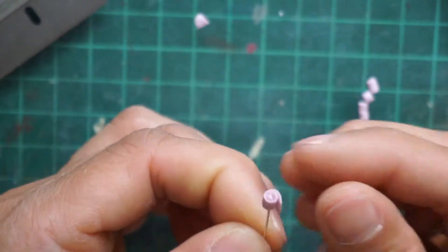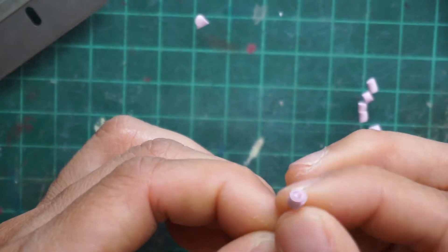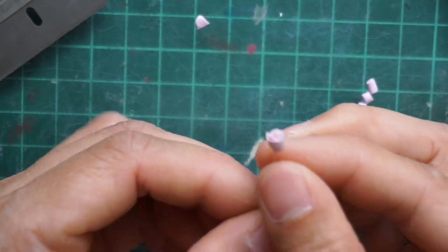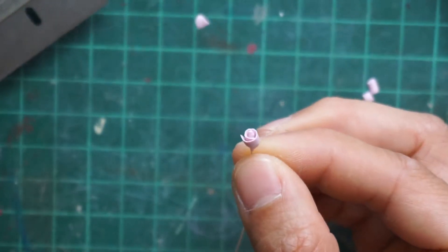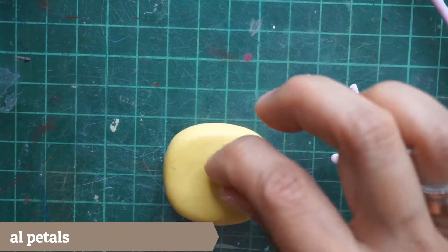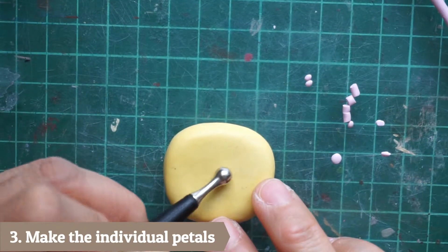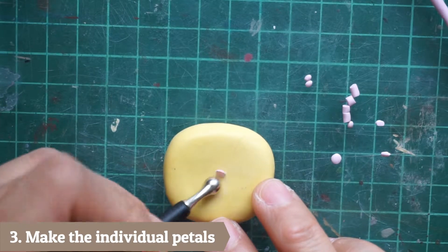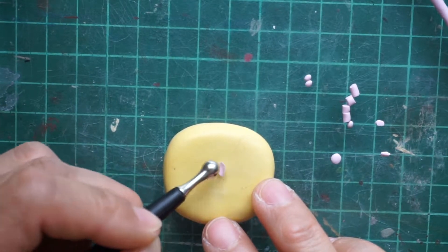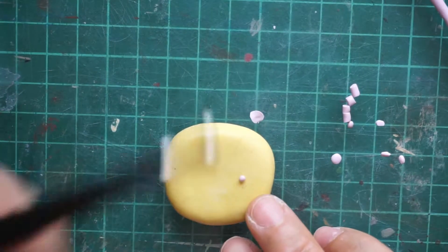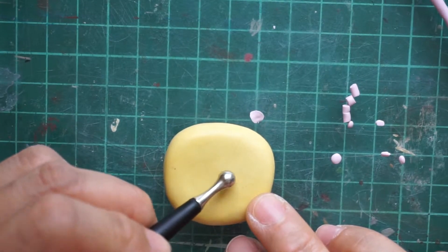Roll several small clay balls and flatten them. Here I am using a silicone mold putty to flatten the clay balls and make the individual petal mold.